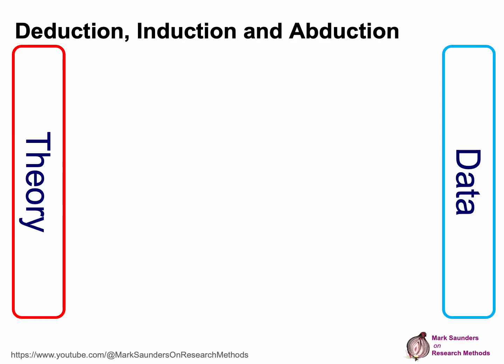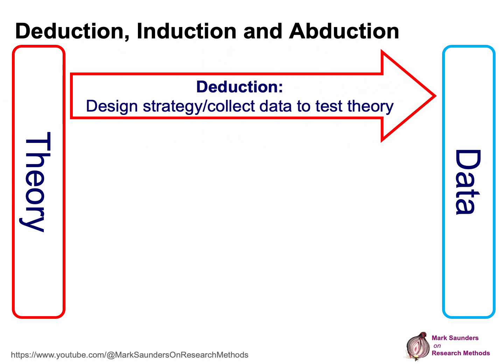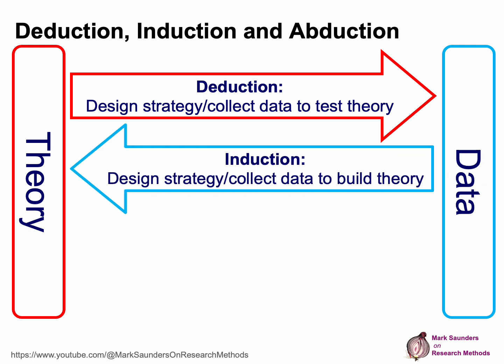Let's now look at what we mean by the terms deduction, induction and abduction. In the diagram we have theory on the left-hand side and data on the right-hand side. With deduction, we start with theory and design a strategy to collect our data to test that theory. In contrast, with induction we start with our data and then build our theory out of it — from data to theory — whilst deduction goes from theory to collecting data to test it.